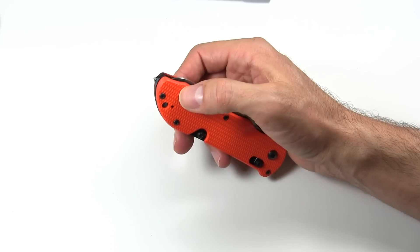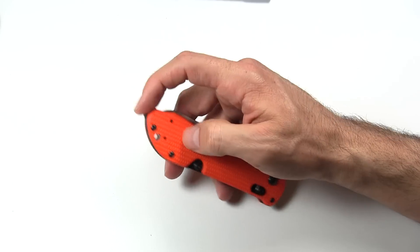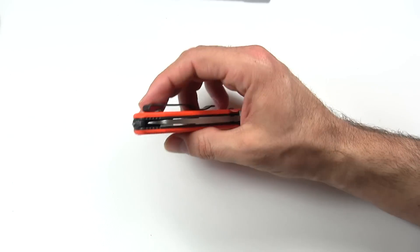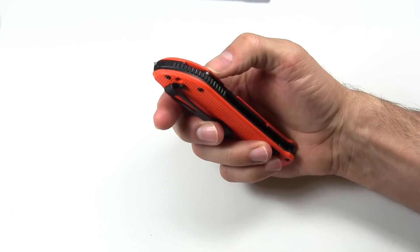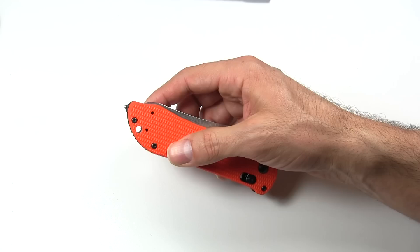And then it folds right back in there. And then on the tip here, carbide steel glass breaking tip. Very sharp. Not had to use that yet myself, thankfully.